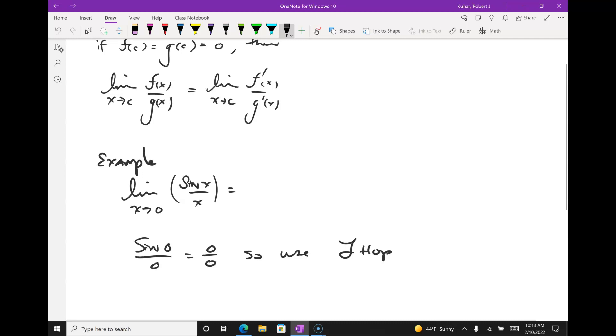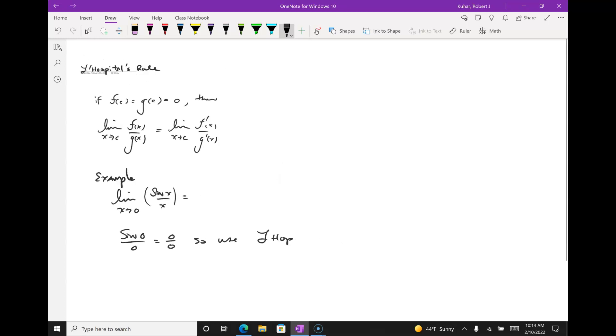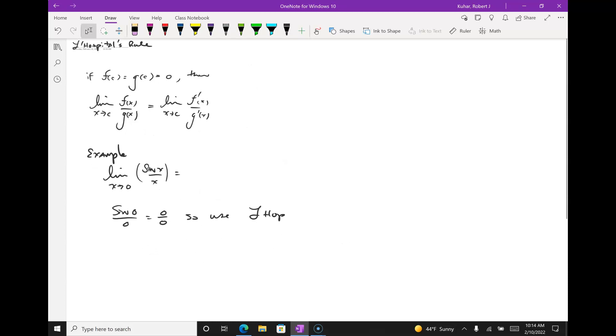L'Hopital's rule. He's a French mathematician who paid better mathematicians to come up with theorems, and then he took credit for it. A real crook. Or rich. It looks like hospital, but it's L'Hopital.